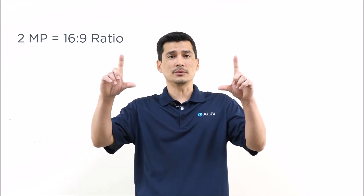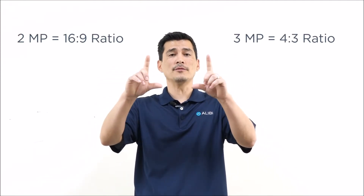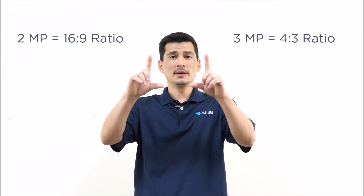You may ask yourself what the difference is between a 2-megapixel and 3-megapixel camera. They both have their advantages and disadvantages. With a 2-megapixel, you have a 16 by 9 aspect ratio. With a 3, you're actually going to get a 4 by 3.